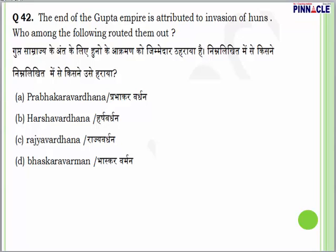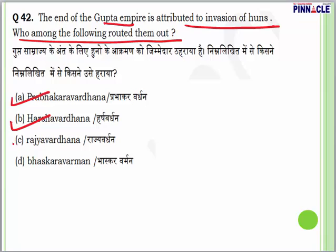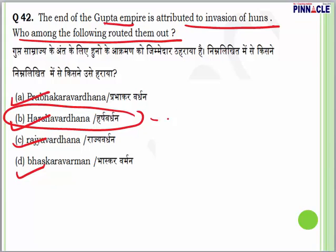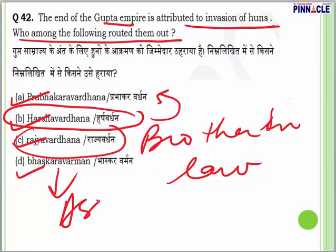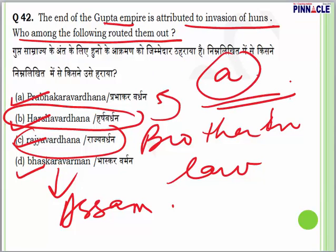Question 42: The end of the Gupta empire is attributed to the invasion of Huns. Who among the following routed them out? Options are Prabhakarvardhana, Harshavardhana, Rajavardhana or Bhaskarvarman. Harshavardhana came to power after his brother died. Rajavardhana was the brother-in-law of Harshavardhana. Bhaskarvarman was the friend of Harshavardhana and ruler of Assam. The answer is A — Prabhakarvardhana.